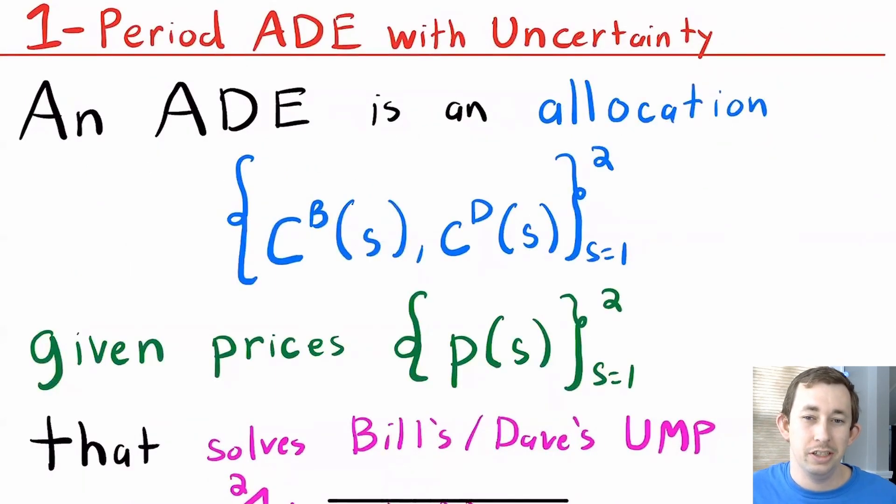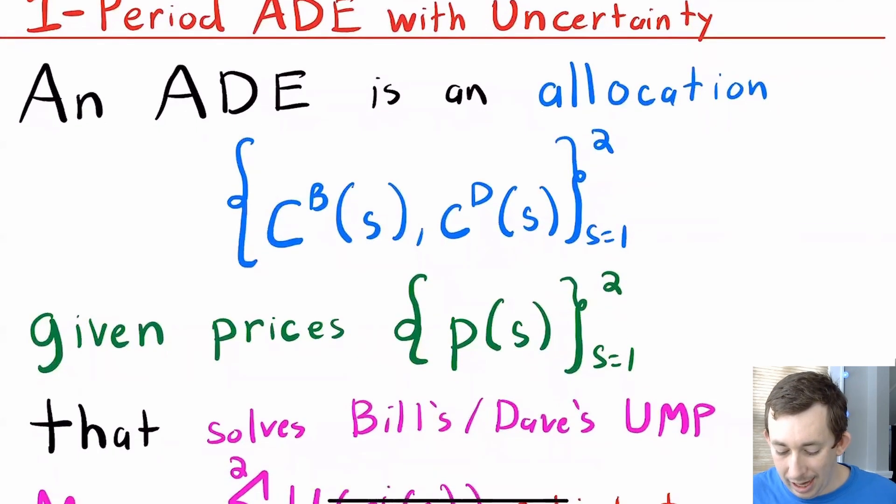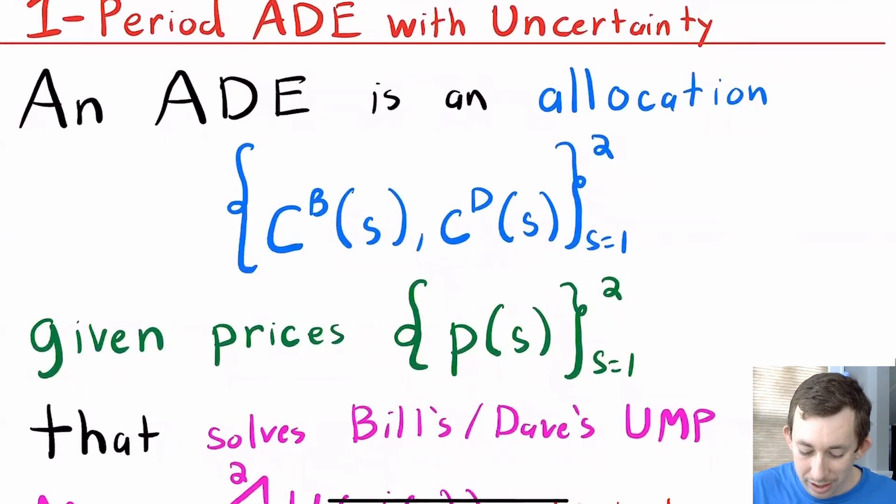Similar to previous videos, let's not solve this right now. Let's just think about what the competitive equilibrium or the one period Arrow-Debreu equilibrium is in this situation. Well, it's an allocation just like before. We've got some coconuts for Bill when it's sunny and some coconuts for Dave when it's sunny, we have some coconuts for Bill when it's snowy, some coconuts for Dave when it's snowy.